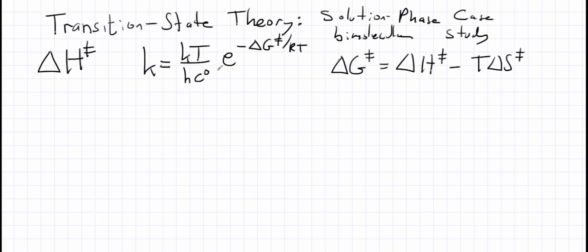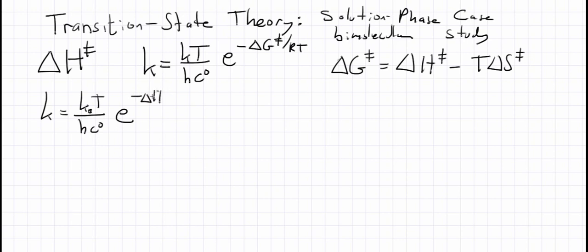So if we split that off, we can say k is equal to kT over hC times e to the minus delta G double dagger, where delta G double dagger is delta H minus T delta S — these are, of course, activation enthalpies and activation entropies.